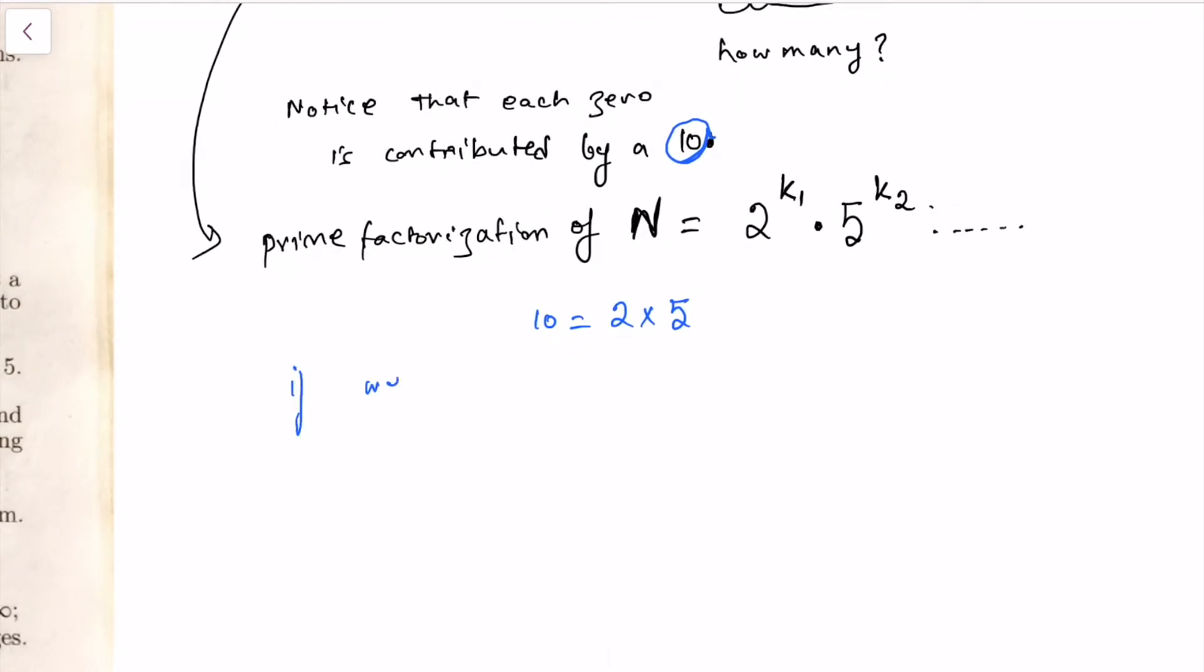So if we look at the number of fives available, then we're done, because with each of those fives we will multiply a two to get a ten, and there will be obviously that many twos available, much more than that as we just discussed.